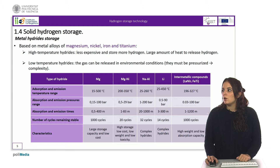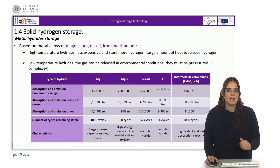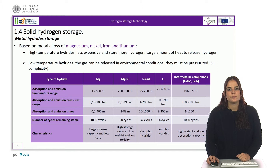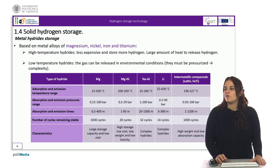In the second column, we find the metal hydride based on magnesium-nickel, which has been widely studied for its relatively high storage capacity by weight, varying from 2.5 to 5%, its low cost, its low weight, and its low toxicity. In this case, their absorption and emission temperature range goes from 200 to 350 degrees Celsius.